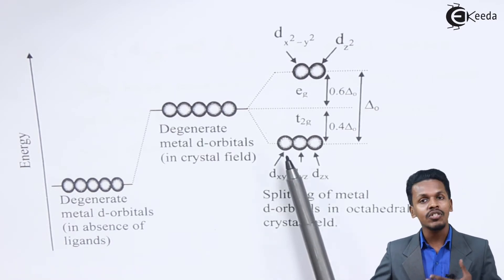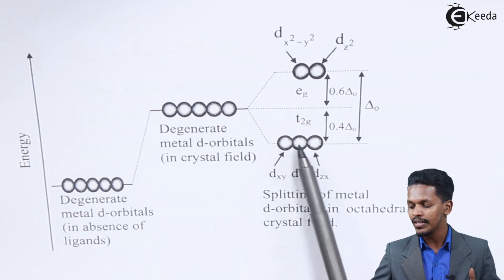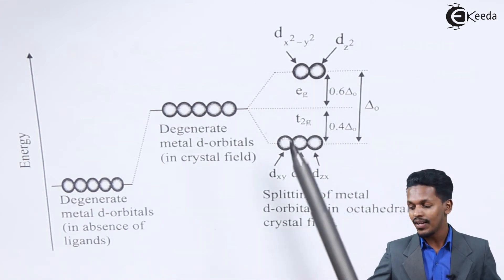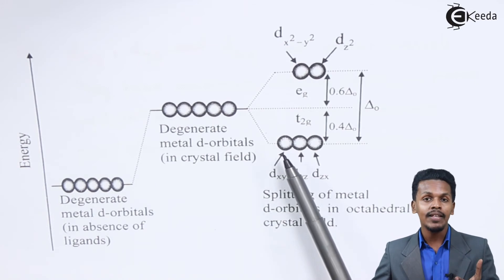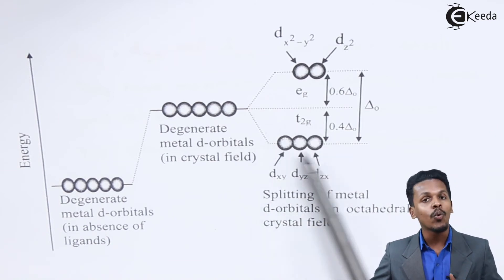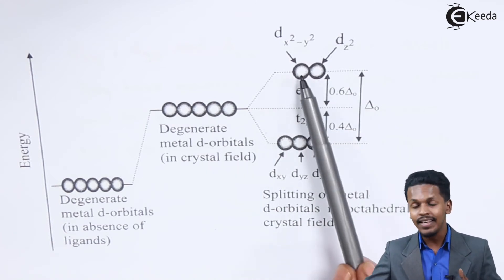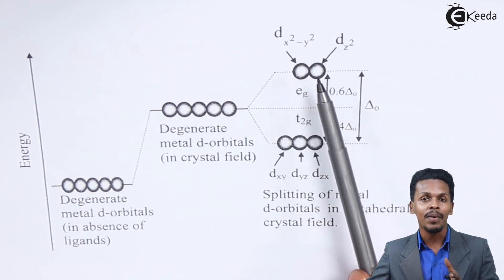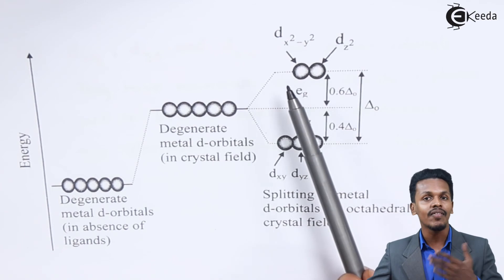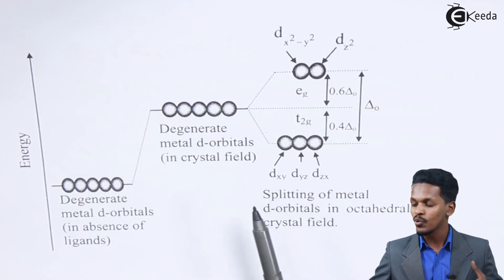If we have to fill three electrons, they will be present at the lower energy level. For the fourth electron, it can be filled at the upper or lower energy level depending on the ligand. If the ligand is a strong field ligand, the splitting will be more and the electrons will be filled in the lower energy level — these complexes are known as low spin complexes, where electrons get paired up. If the fourth electron is excited to the higher level, that complex is known as a high spin complex because the splitting is less, and the electron can shift between energy levels easily, leaving electrons unpaired.